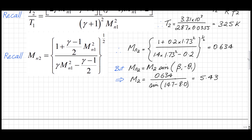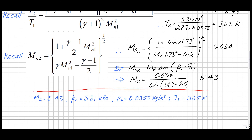Let's summarize what we have so far. Downstream of the first shockwave, we have the Mach number, static pressure, static density, and static temperature. We're now ready to look at the second shockwave. But before that, I want to redo those calculations using a compressible flow calculator, which I'll do in the next video.